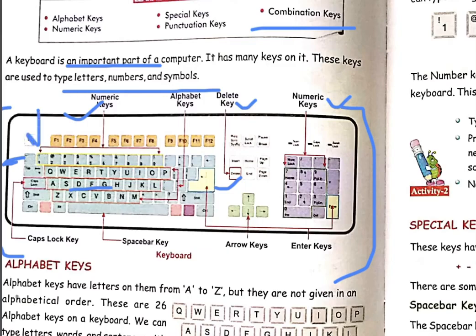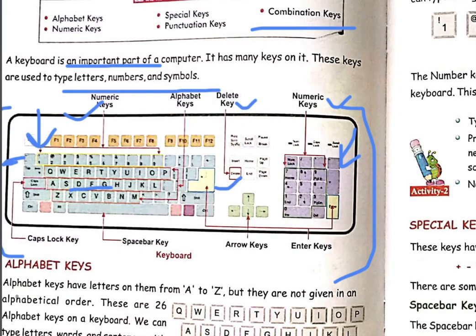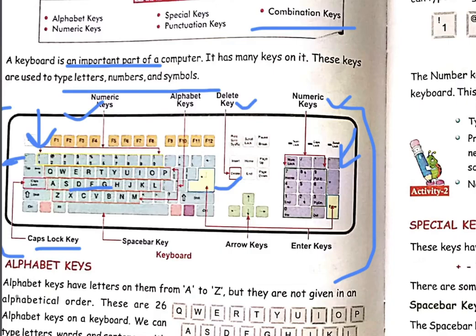Numeric keys are also visible on this side of the keyboard, and another set is on the other side. Now, the Caps Lock key — you can see it here; this is your Caps Lock key. Notice where the arrow is pointing — that is your Caps Lock.